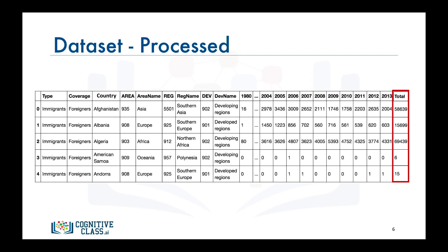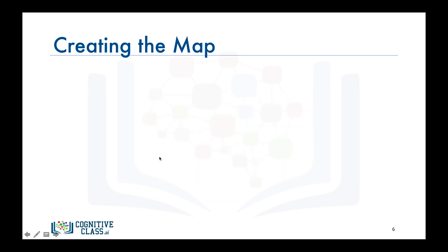For Afghanistan, the total is 58,639, and for Albania it is 15,699, and so on. We name our data frame df_canada. Now that we know how the data is stored, let's see how we can generate a choropleth map of the world showing immigration to Canada.